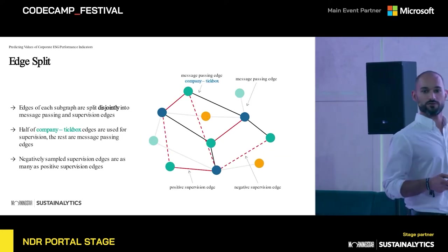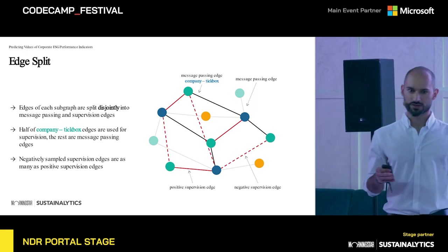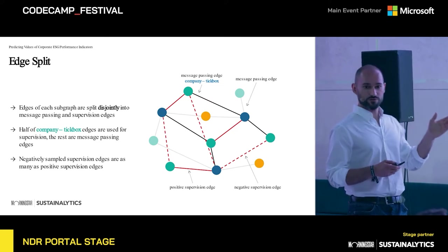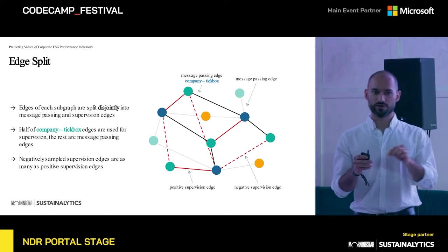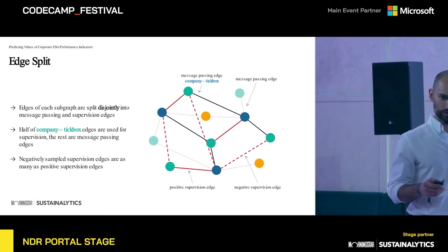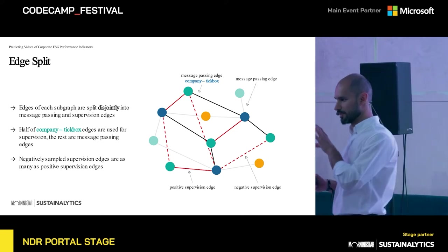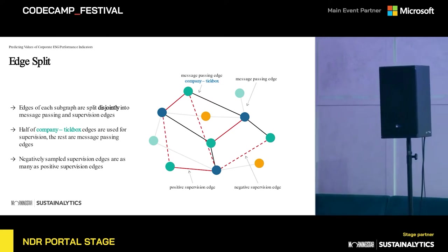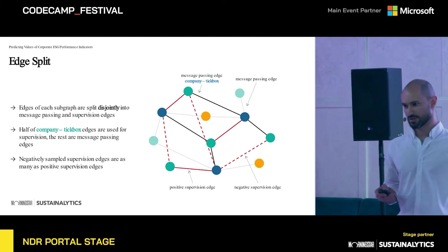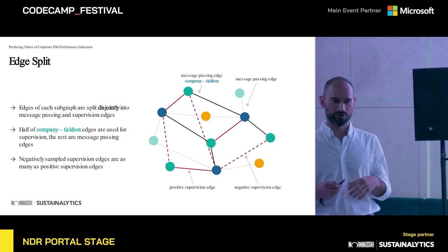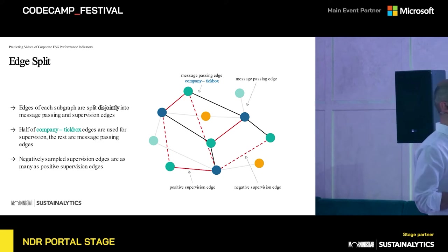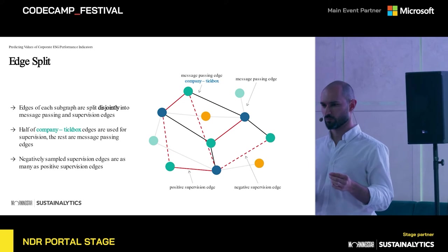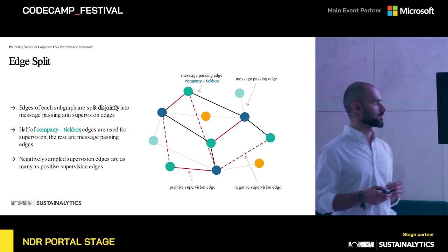We again split the edges into message passing and supervision edges. The supervision edges are chosen only from the edges that connect companies and tick boxes — we make half of them supervision edges and use the other half for message passing. We also sample negative supervision edges, which have label zero for training the model and building the loss function, sampled with the same quantity as the positive supervision edges.